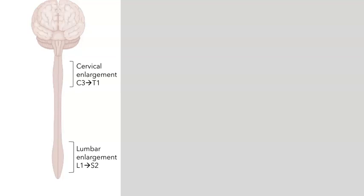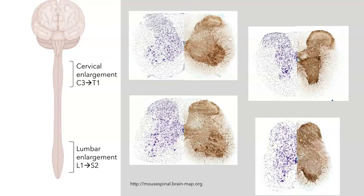Recall that the spinal cord is about 1 cm in diameter but this varies. When we look at the spinal cord we see two enlargements: one around the cervical region and one around the lumbar region, corresponding to the spinal segments containing motor neurons that innervate our arms and legs. Using the mouse spinal atlas, composite sections through cervical, thoracic, lumbar, and sacral regions were assembled using both Nissl-stained tissue, showing cell bodies, and tissue stained for acetylcholinesterase activity, showing neurons using acetylcholine.